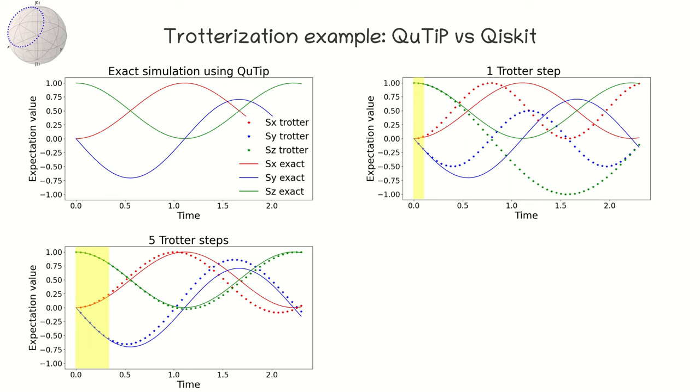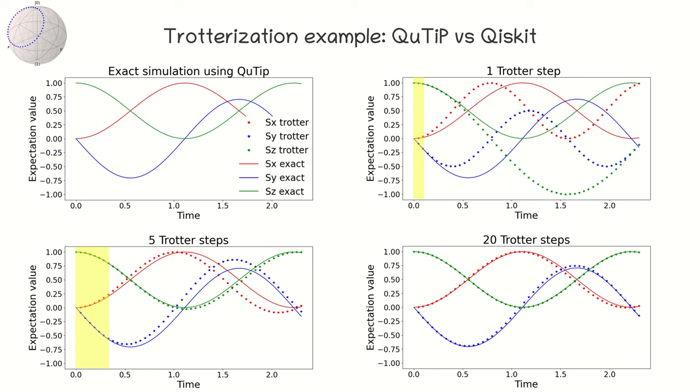Thus, the longer the evolution you want to simulate, the more trotter steps you need to use. As you can see in the last figure, 20 trotter steps can simulate the evolution quite well for the time interval we have chosen.